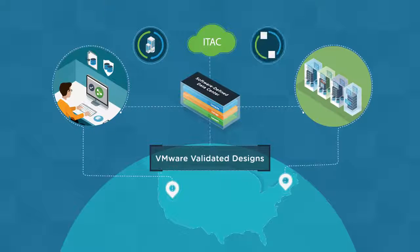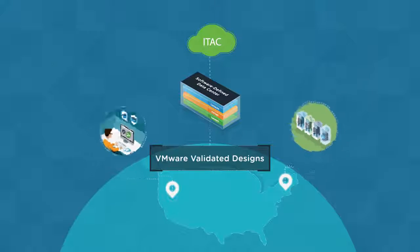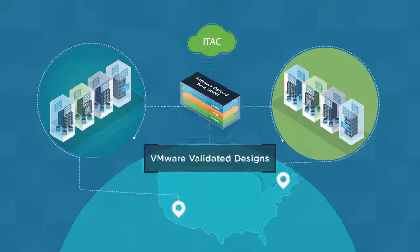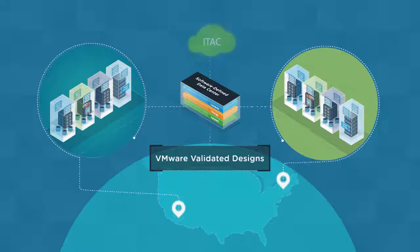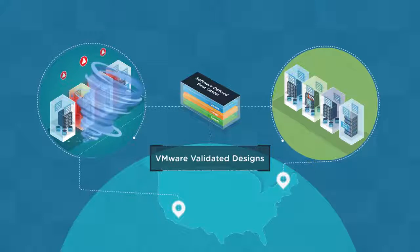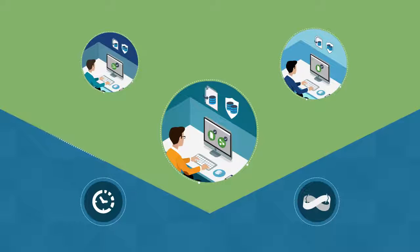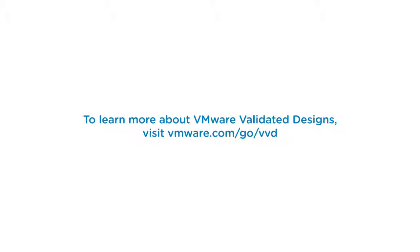Business continuity and disaster recovery are essential for the modern data center. The dual region model of the IT Automation Cloud VMware Validated Design extends the software-defined data center across geographic regions, protecting against catastrophic events and ensuring that IT delivers the availability and resiliency required to support the most critical applications and workloads. To learn more about VMware Validated Designs, visit vmware.com/go/bvb.